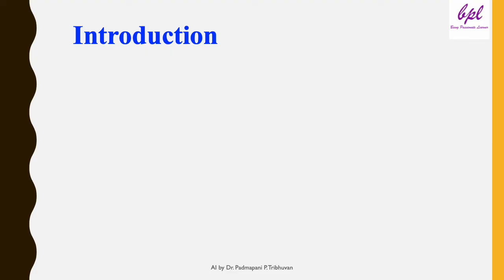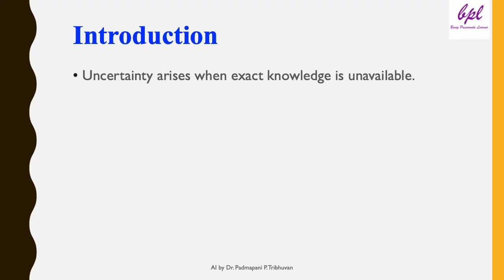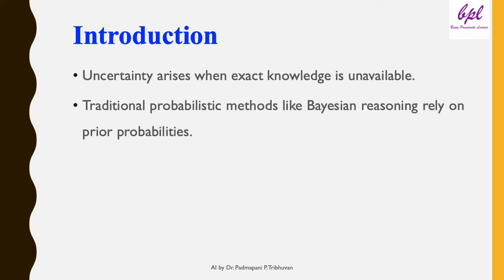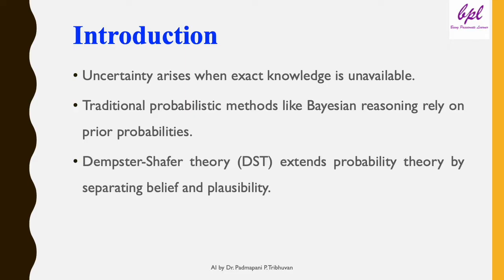In AI and decision-making systems we often encounter uncertainty due to incomplete or conflicting information. Uncertainty arises when exact knowledge is unavailable. Traditional probabilistic methods like Bayesian reasoning rely on prior probabilities. While Bayesian reasoning is widely used, Dempster-Shafer theory offers a flexible alternative. DST separates belief, possibility and evidence, allowing us to work with uncertainty in a broader context.